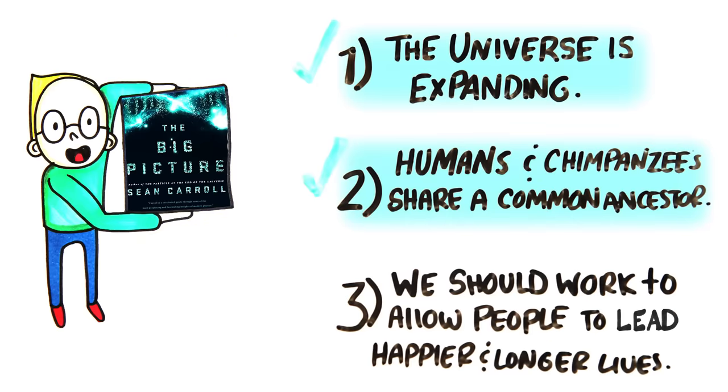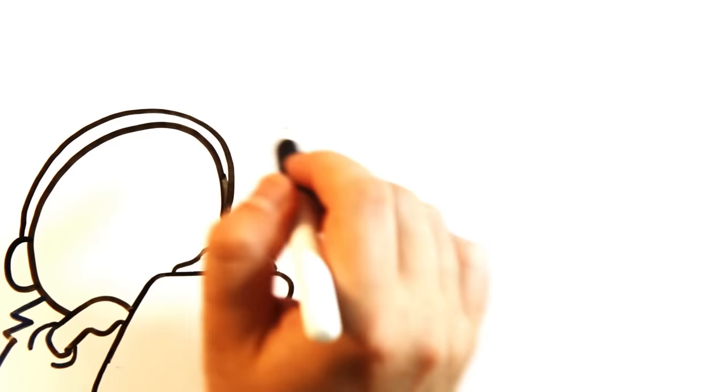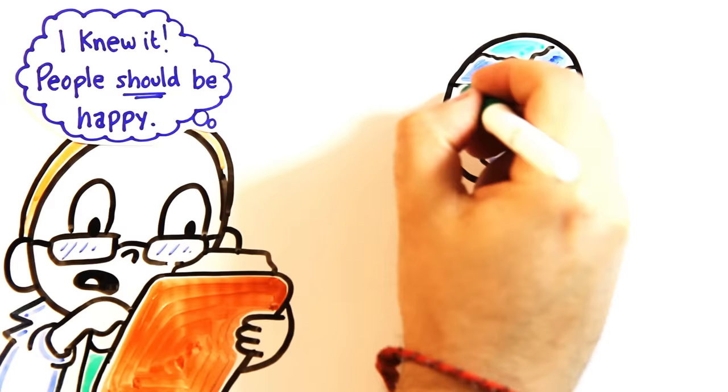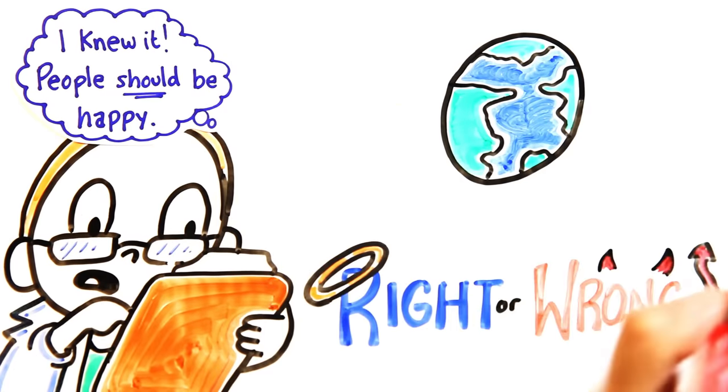We use empiricism, reasoning, and observation to explain them. The last statement is not rooted in science. Science doesn't involve doing experiments to decide if people should lead happier, longer lives. Science just observes the world, and it doesn't say whether something is right or wrong.